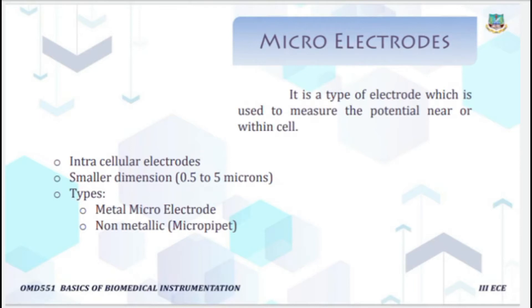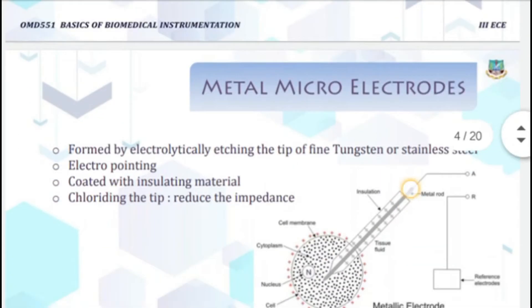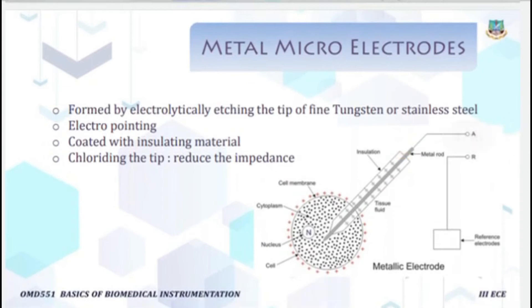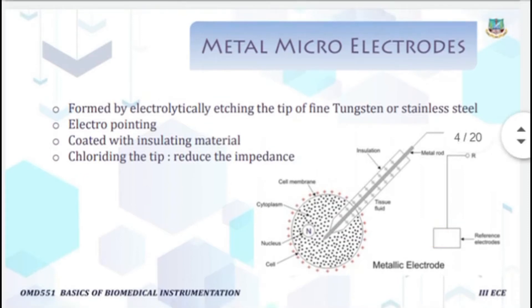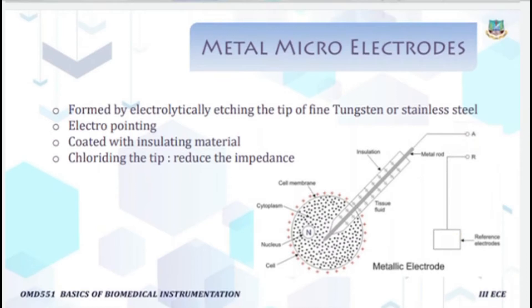The first type is the metal micro electrode, also called metallic electrode. Metal micro electrodes are formed by electrolytically etching the tip of a fine tungsten or stainless steel wire to a fine point. This technique is called electro-pointing. The metal micro electrodes are coated almost to the micro tip with an insulating material.